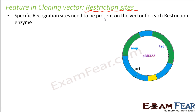Specific recognition sites need to be present on the vector for each restriction enzyme. Each restriction enzyme has a specific recognition sequence — for example, BamHI, SalI, EcoRI, PVU2, PST1, PVU1 — there are many restriction enzymes, and each has a specific restriction site. All those recognition sequences need to be present on the vector, at least for many of them, because if those restriction sites are not present, the restriction enzymes will not be able to operate.